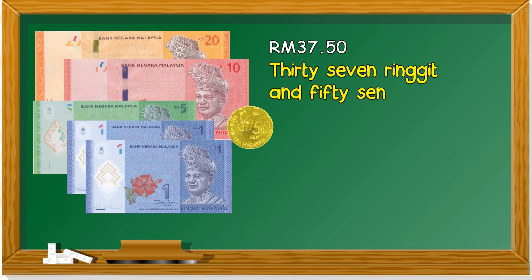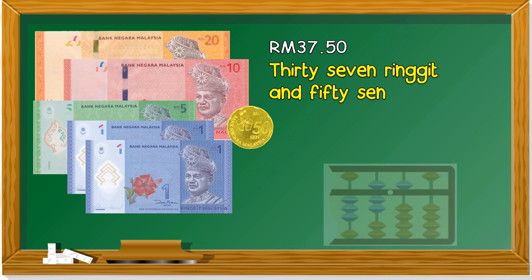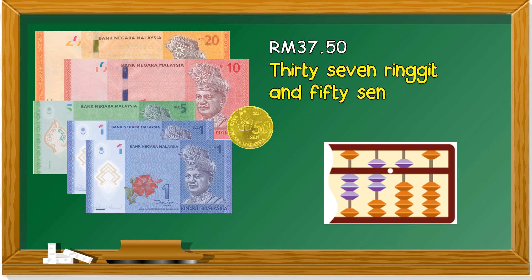We write it like this: 37 ringgit and 50 cent. Make sure to get your spelling correctly. If we represent it in Abacus, it looks like this. Remember: four rows, two rows on the left for ringgit and two rows on the right for cent. The first row for ringgit must be 3, then followed by 7, 5, and 0. Remember the dot — this dot is to separate between the ringgit and cent.